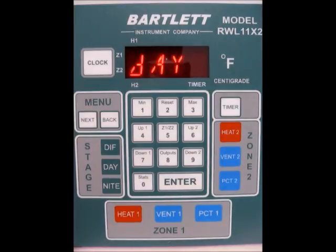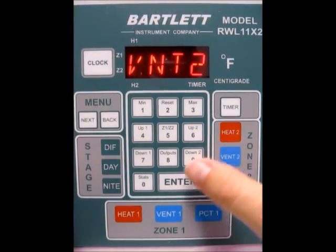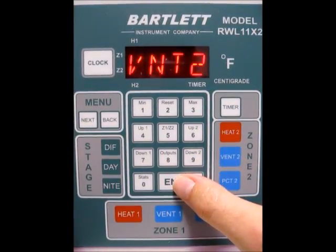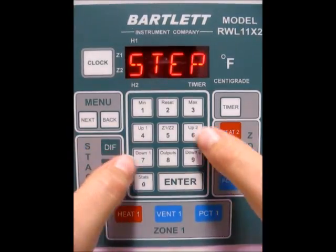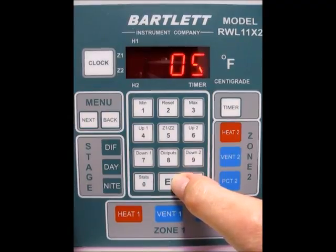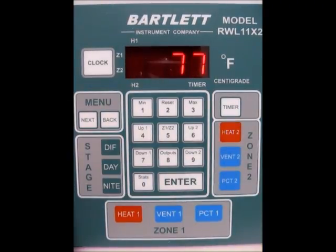So now that we've got that set, we'll go ahead and set Vent 2. So same thing with that. If it's not set to Auto, make sure it is. Press Enter. Enter your step size. So we're going to enter a step size of 5. So with our target temperature at 75, our output temperature for Vent 2 should come on at 80 degrees.